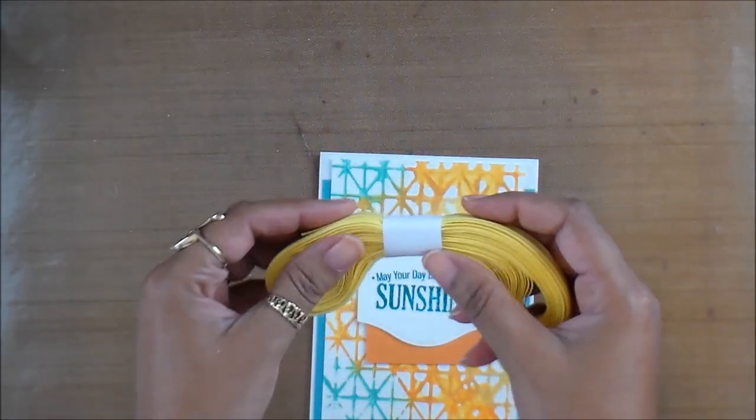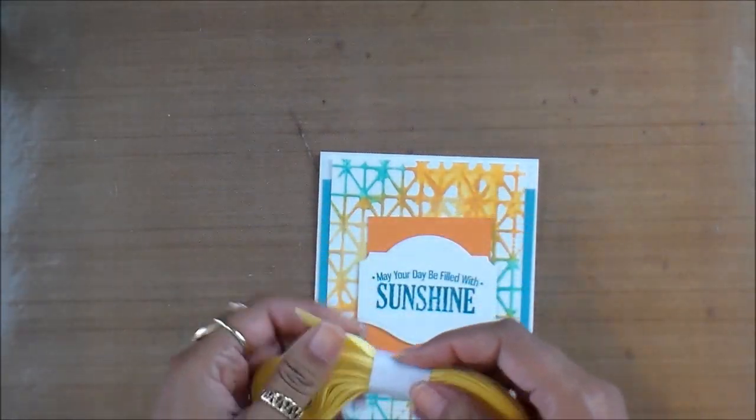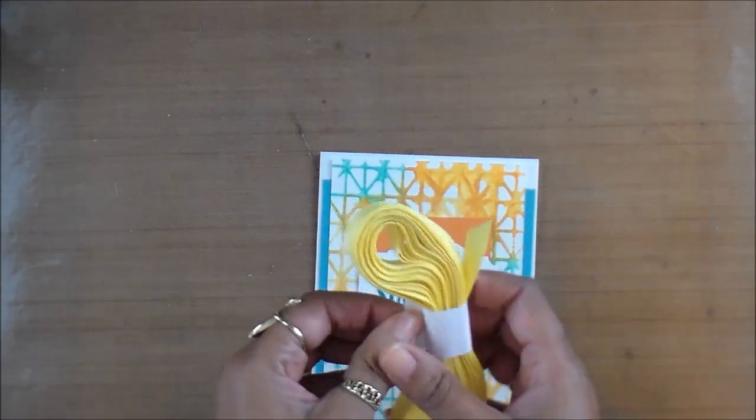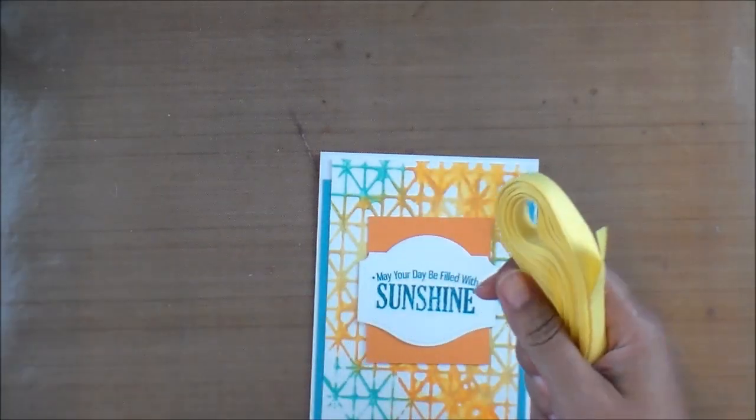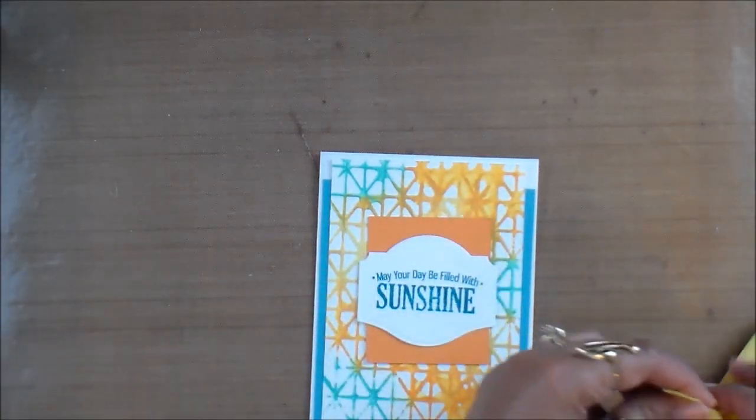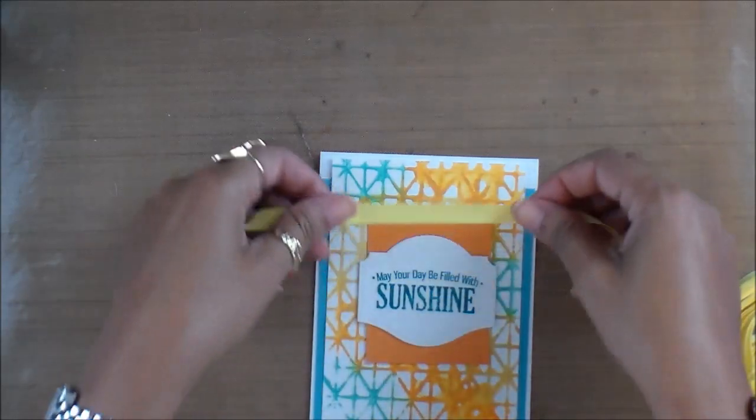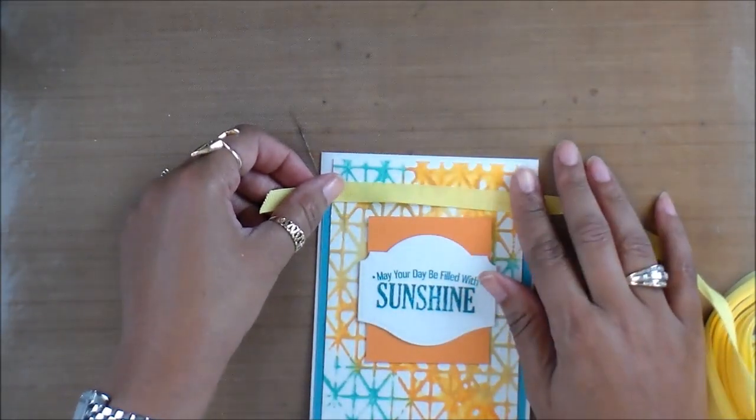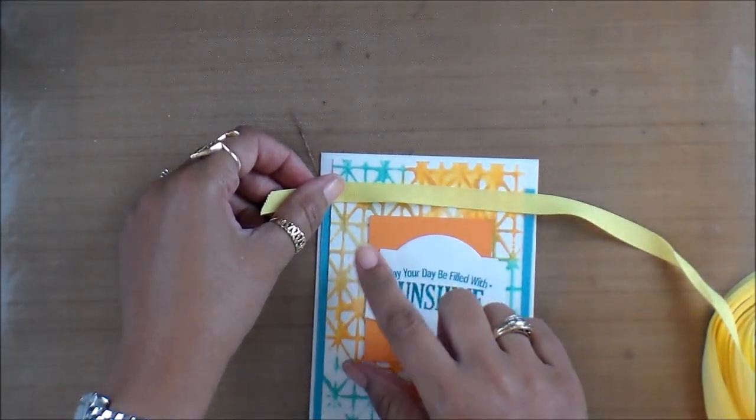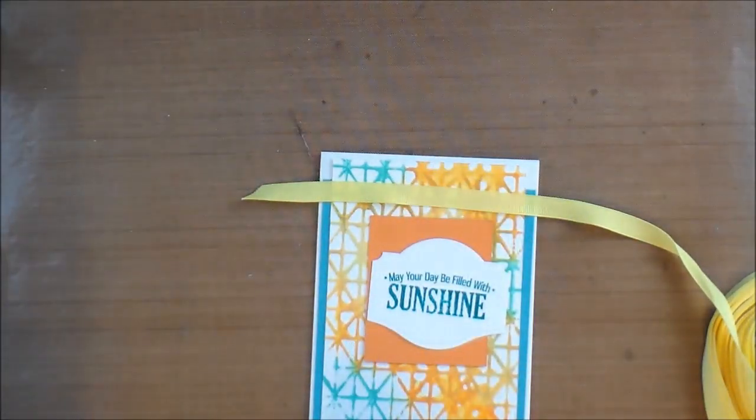I think I want to add some ribbon to this. I have this really pretty ribbon that I picked up. I'm not quite sure where I got this from. I think it was on a roll at Hobby Lobby. I'm just going to get a strip of that ribbon, bring in a little bit of that yellow because that yellow is kind of missing.